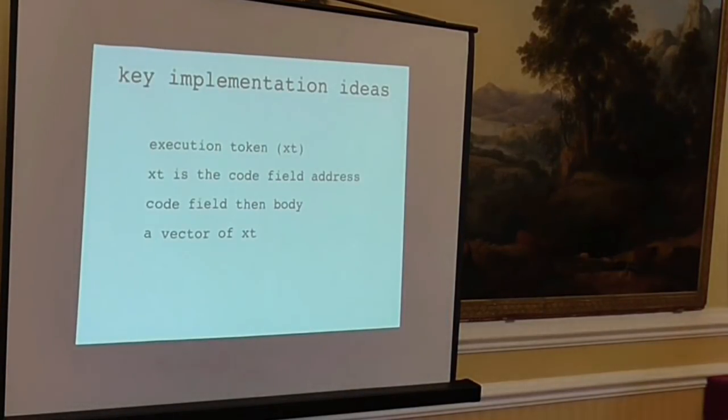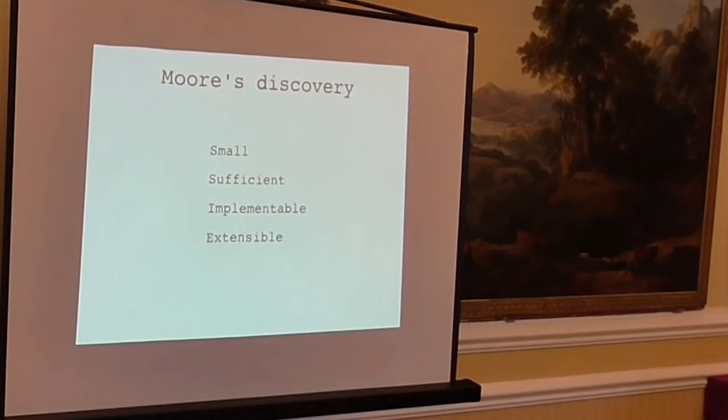Let's briefly get back here. The key implementation ideas here are that words should be reduced to an execution token. An execution token is just an address in memory of a code field. And words consist of a code field followed by a body, and the body is a vector of execution tokens. That's basically everything you need to know to implement Forth. In the Forth FAQ, Charles Moore was said to have discovered this language rather than invented it. And I think his discovery was to find a really small language that was sufficient to do computation and you could implement on your own in a couple of weeks if you're skilled, which having implemented, you can then extend using itself. You can describe any problem you're particularly going to work on in Forth.